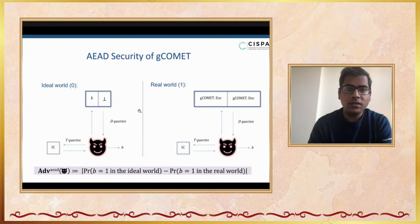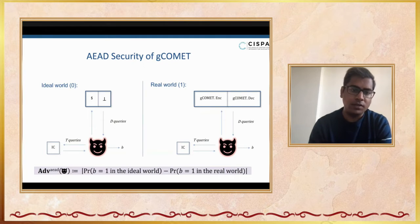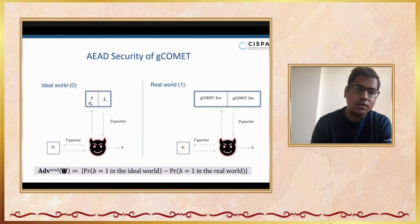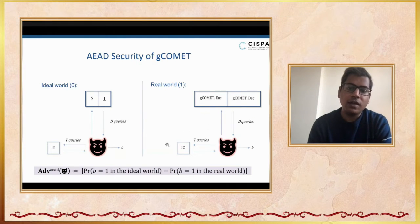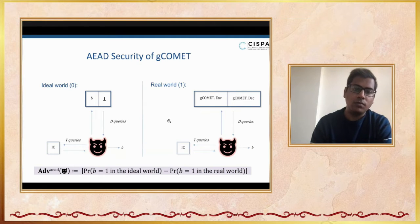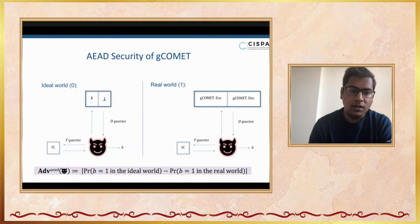When we say security, we consider the AEAD security or the combined security of the construction. This is a simple distinguishing game between an ideal world — which has a uniform random string generator and an abort oracle that rejects each decryption query — and the real world, where we have the construction's encryption and decryption algorithms. We also provide ideal cipher access to the adversary, since the adversary should be able to query the internal primitive. The advantage is defined as the probability that it returns bit 1 in the ideal world minus the probability it returns 1 in the real world.